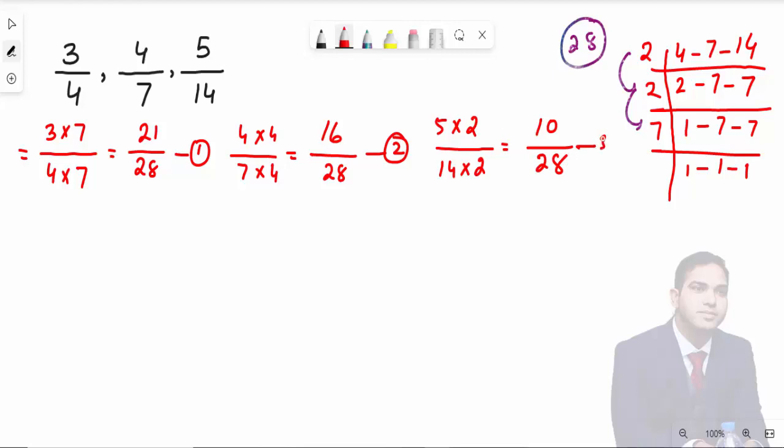Now you can see that all denominators are 28. Now you can easily arrange them in ascending and descending order. Let's see how.